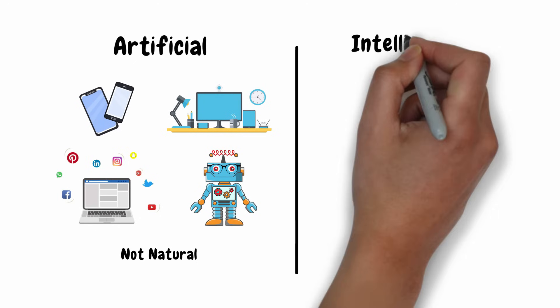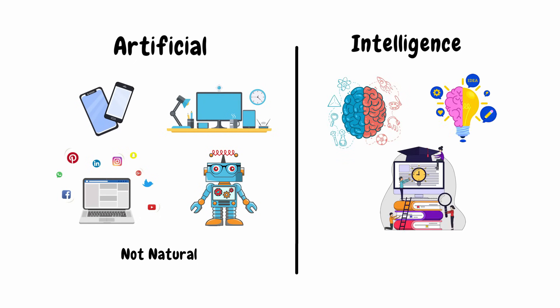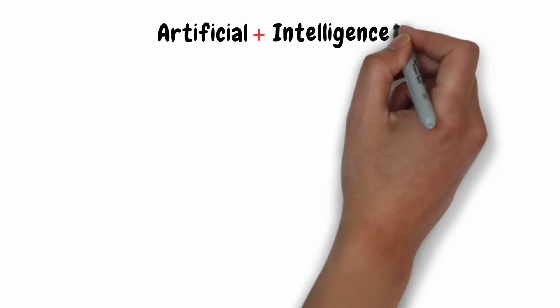And what do you understand by intelligence? It is the ability to understand, think and learn. So what do we get when we combine these two together?